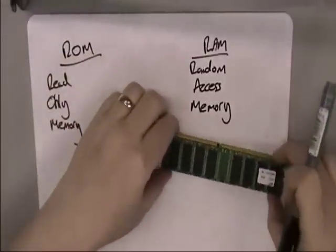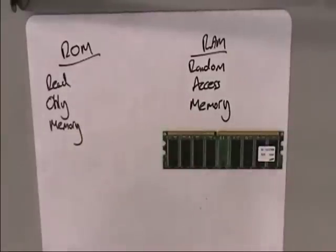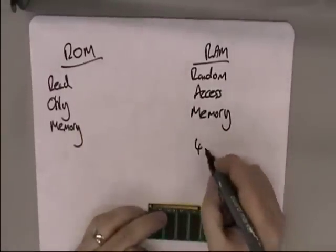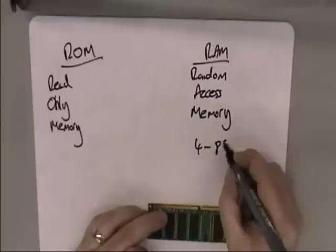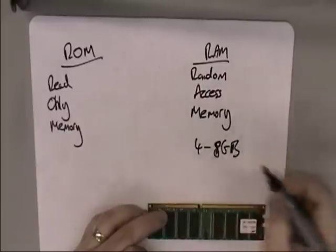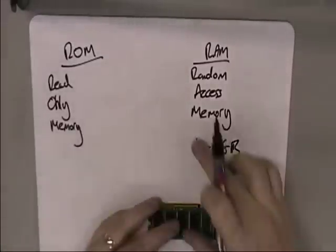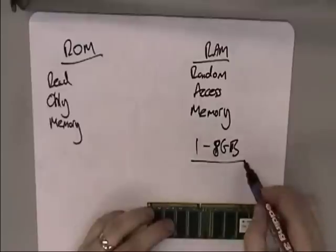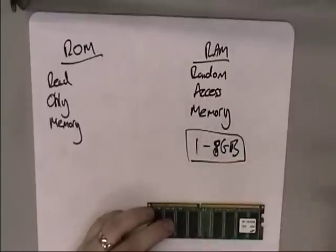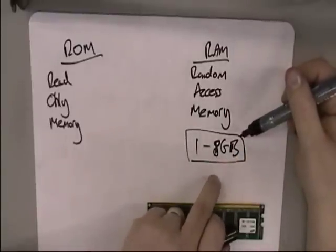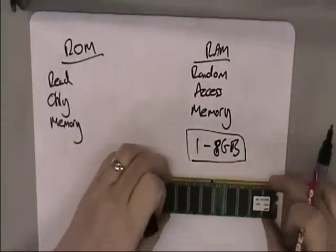RAM is typically of the order of 4 to 8 gigabytes in size. You might have 1, 2, 4, or 8 gigabytes. So we're talking about 1 to 8 gigabytes in most computer systems. If you went and bought a PC today, it would probably have 2, 4, or 8 gigabytes of RAM — of main memory.